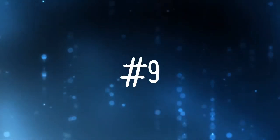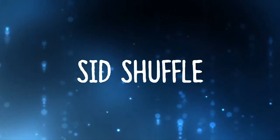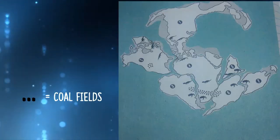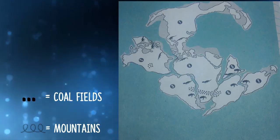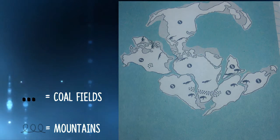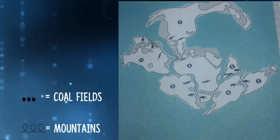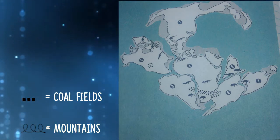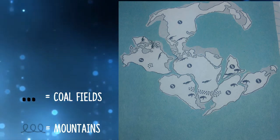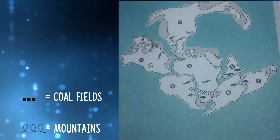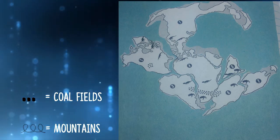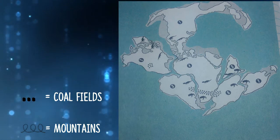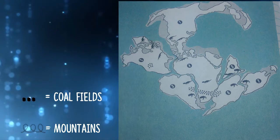Number 9. Continental drift is a theory first hypothesized by Alfred Wegener. It states that the continents had moved from their original locations. The original continent, called Pangaea, separated into Laurasia and Gondwanaland, which then separated into the seven continents we know today.